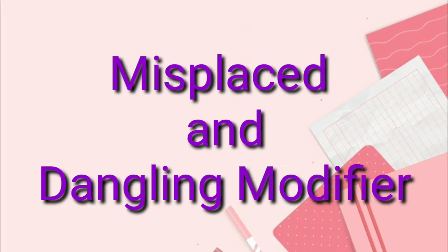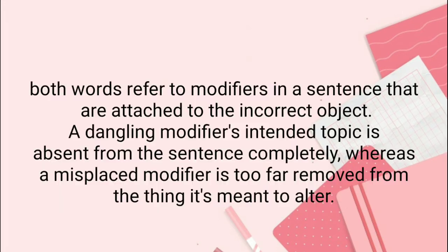Let's talk about misplaced and dangling modifiers. Both words refer to modifiers in a sentence that are attached to the incorrect object. A dangling modifier's intended topic is absent from the sentence completely, whereas a misplaced modifier is too far removed from the thing it's meant to alter.